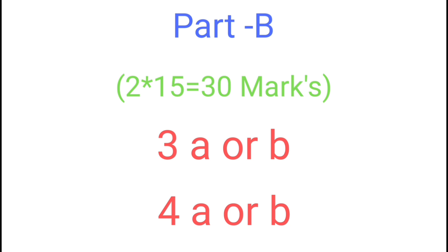In Part B, you will have questions 3 and 4 with internal choice — 3A, 4A, 3B, 4B. Attempt any one from 3A or 3B, and 4A or 4B. Each question carries 15 marks, so you have to write at least three pages to get all 15 marks.